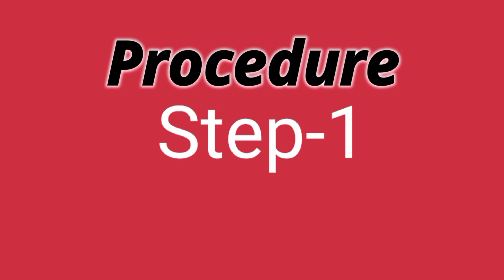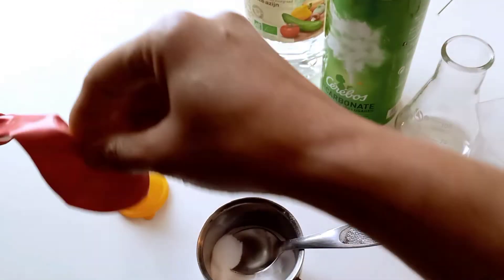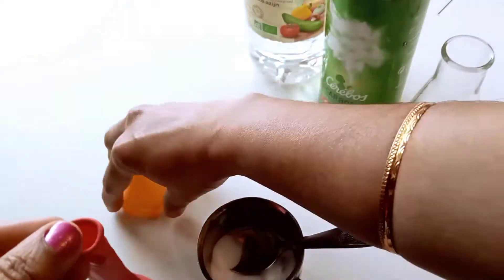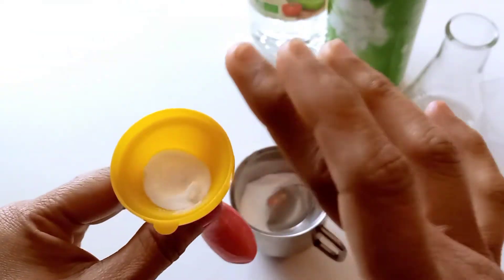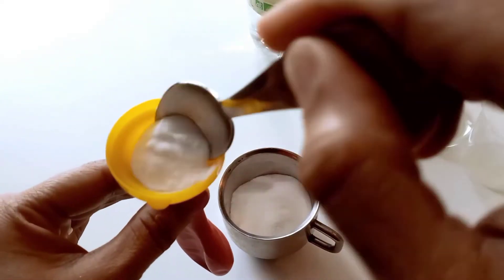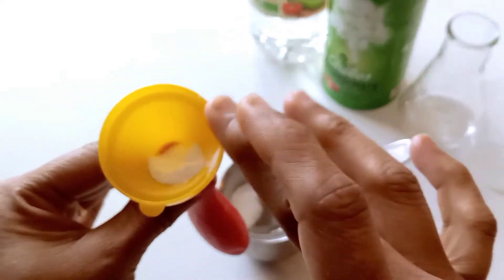Procedure for step one: Let us take a balloon and add two tablespoons of baking soda using a small funnel. Let us gently tap the funnel so that the baking soda will be collected into the balloon.